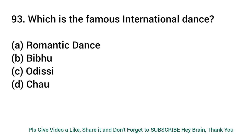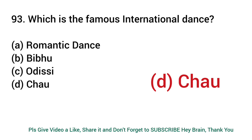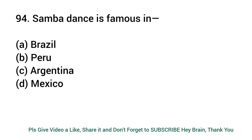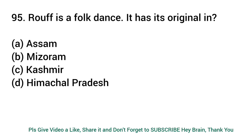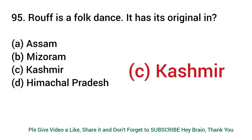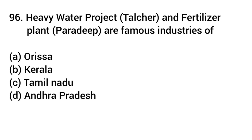Which is the famous international dance? Answer: Cha-cha. Samba dance is famous in? Answer: Brazil. Rove is a folk dance — it has its origins in? Answer: Kashmir. Heavy water project, Talcher and fertilizer plant Paradeep are famous industries of? Answer: Odisha.